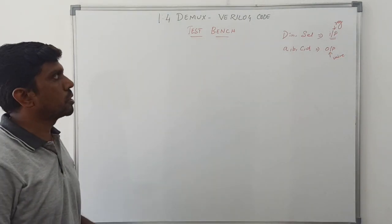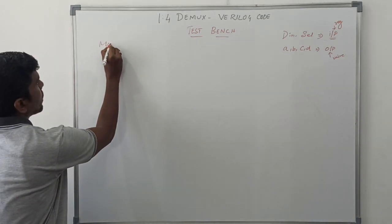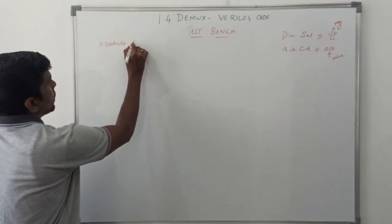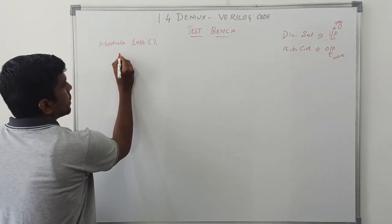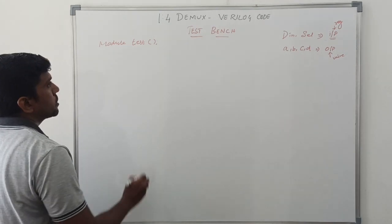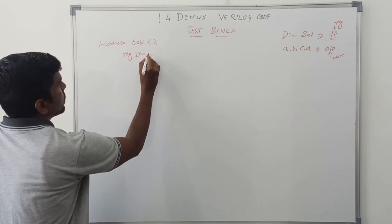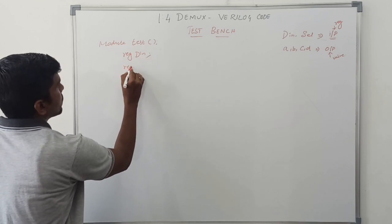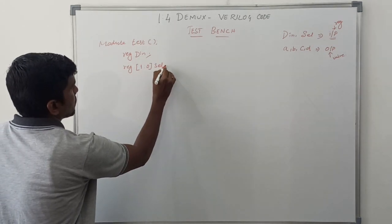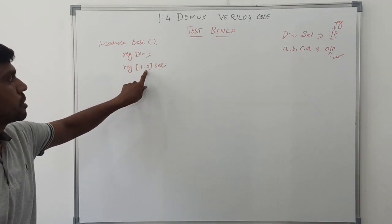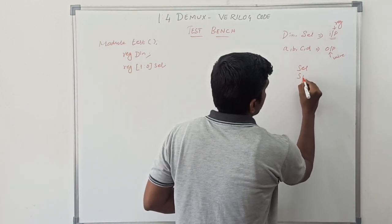It is a basic concept. Now I am going to write the Verilog HDL code. First I write module, then the module name — module name is 'test'. Then declaration of input variables: reg D_in, and reg [1:0] selection. This selection line is in vector format 1 to 0, so this selection line has 2 variables: S1 and S0.